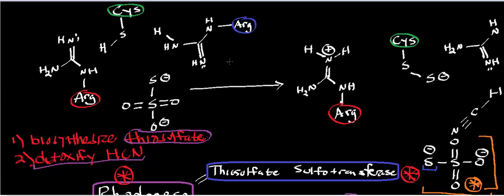So now we're sort of in the active site of rhodanese, or thiosulfate sulfotransferase. There are two critical arginine residues in the active site that both start out in the deprotonated state — something we're really not used to seeing. In many cases, arginine is in the protonated state with a positive charge used to stabilize a negative charge. But now we're actually going to see these arginines act as Brønsted-Lowry acids and bases.